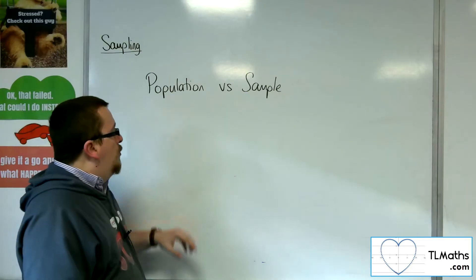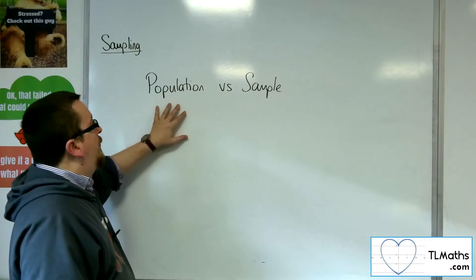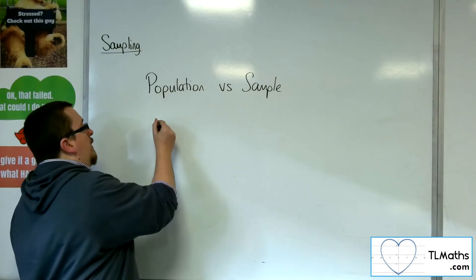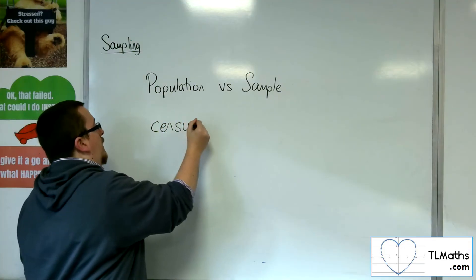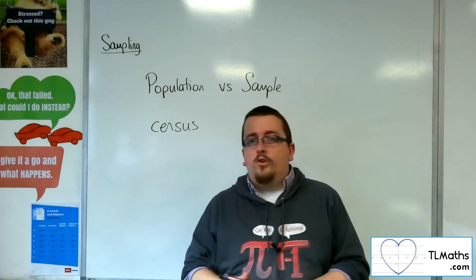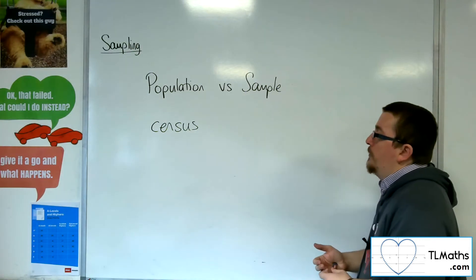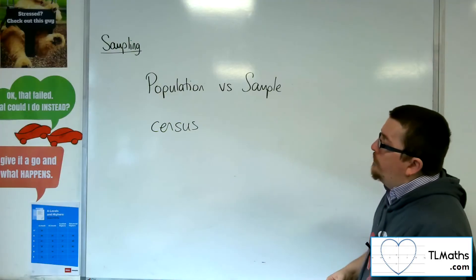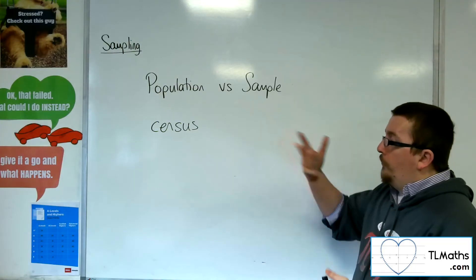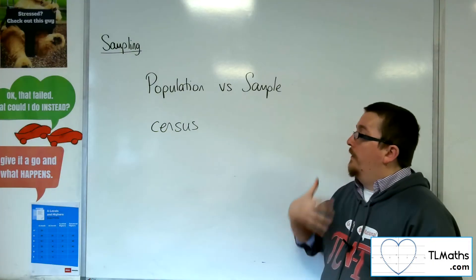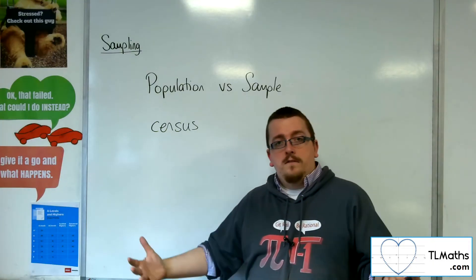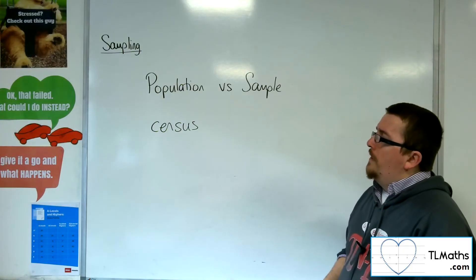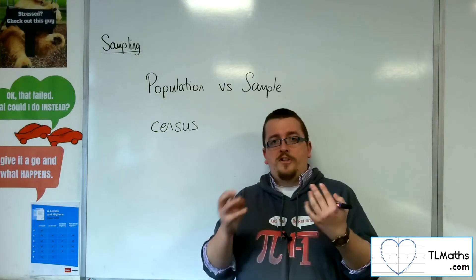But you could get very close to the full population if, for example, you sent out a census. A census is a big questionnaire that would be sent out to all the people in the UK, for example, and you'd have to respond and answer questions based on that. A census is done every few years, and it can capture the full population rather than just a sample.